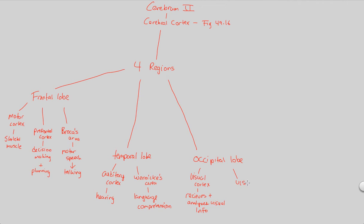In addition, the occipital lobe contains the visual association cortex, which works hand in hand with the visual cortex. This is important in combining images — so when you see a scene with a car, a tree, and a road, all of that is combined correctly in the visual association cortex. It also allows you to recognize objects. Think of seeing, understanding, and visualizing things as all happening within the occipital lobe.